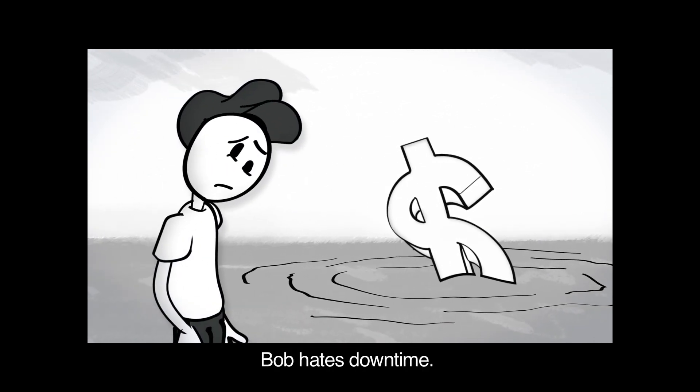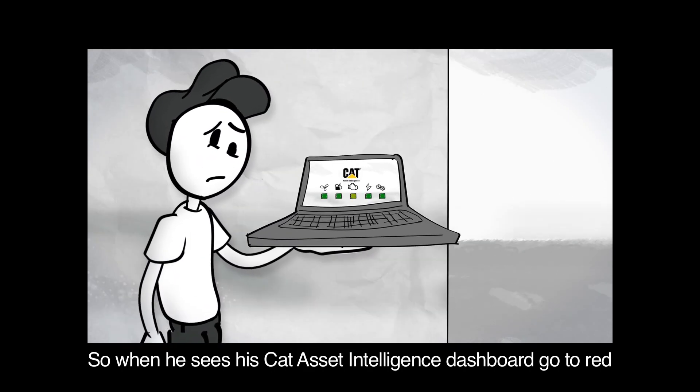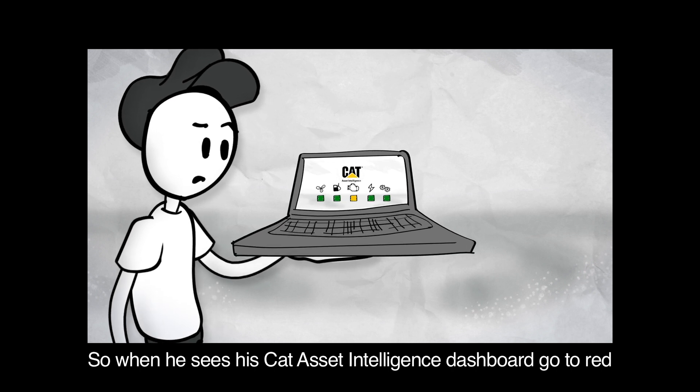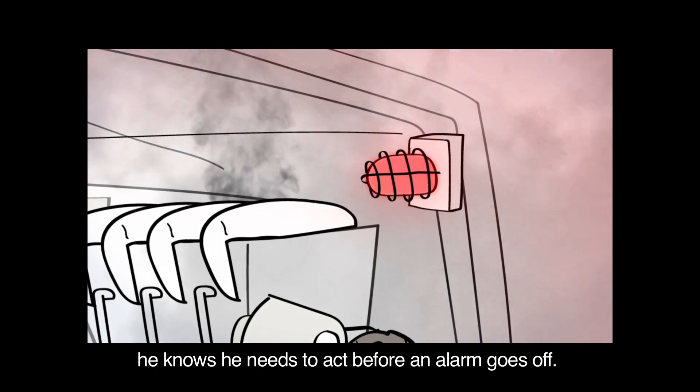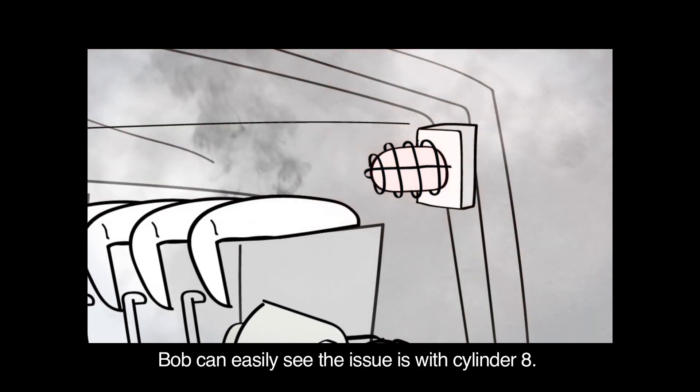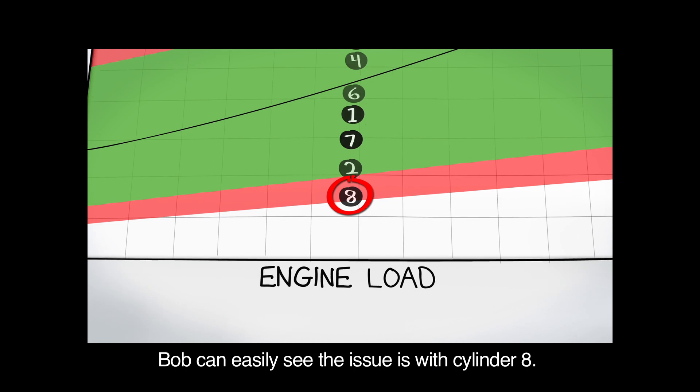Bob hates downtime, so when he sees his CAT Asset Intelligence dashboard go to red, he knows he needs to act before an alarm goes off. Bob can easily see the issue is with cylinder eight.